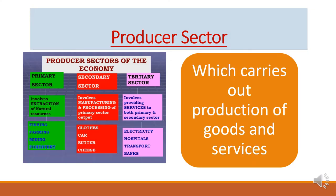First of all, the producer sector — we can also name it the production sector. As its name clearly shows, it is the sector where goods and services are produced. That sector of the economy which carries out production of goods and services is called the producer sector or production sector. Production means to create utility in goods and services so they can be usable for persons who want to use them. All the producer firms involved in production activities are included in this sector.